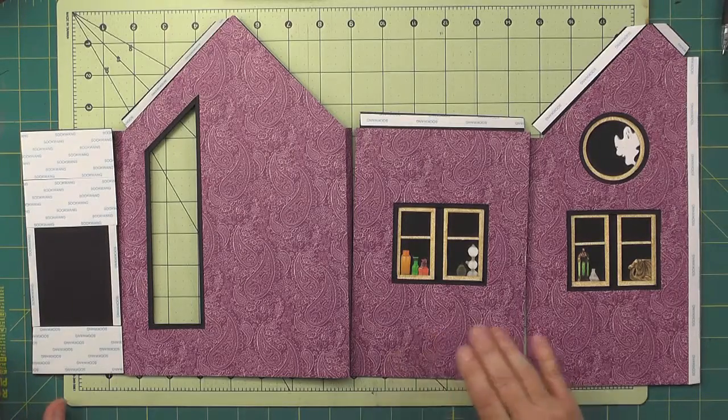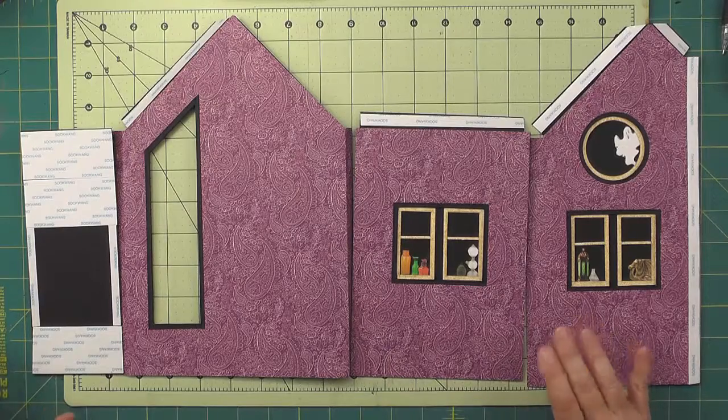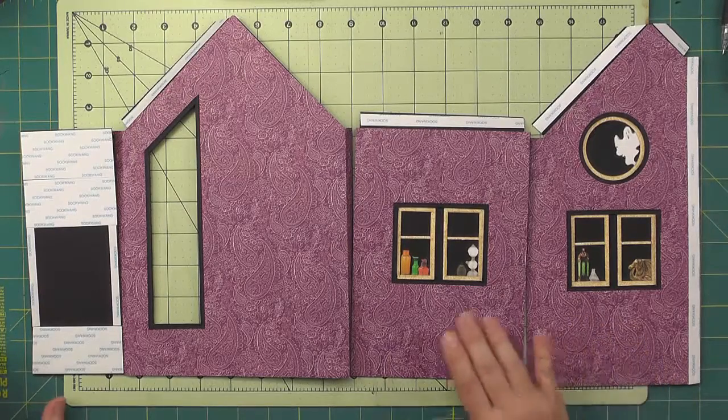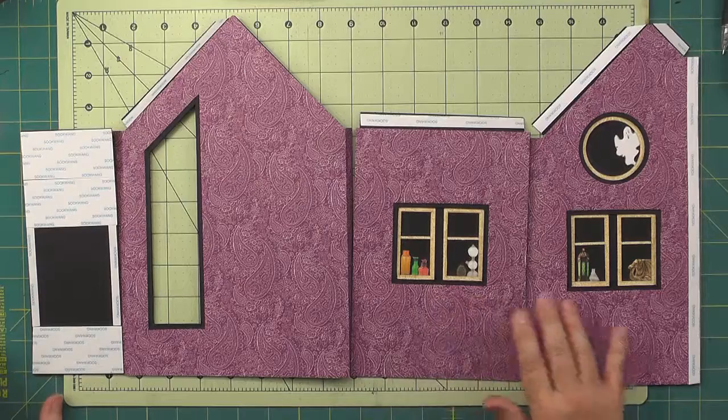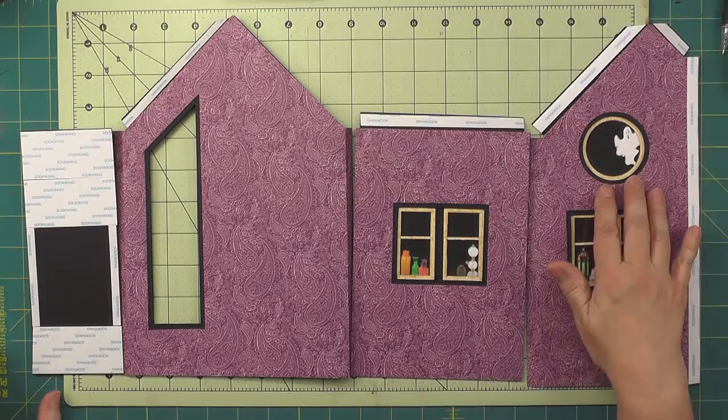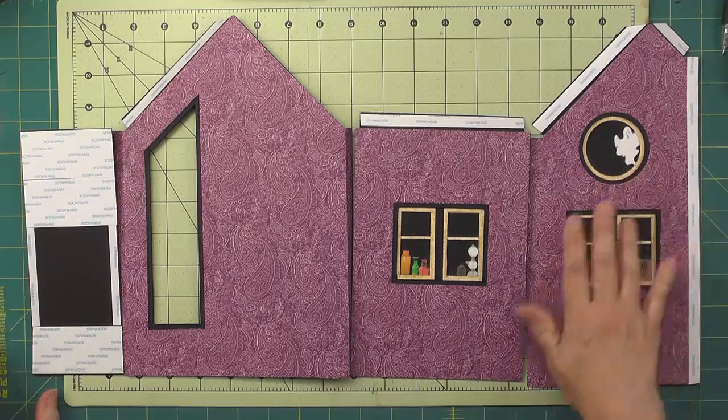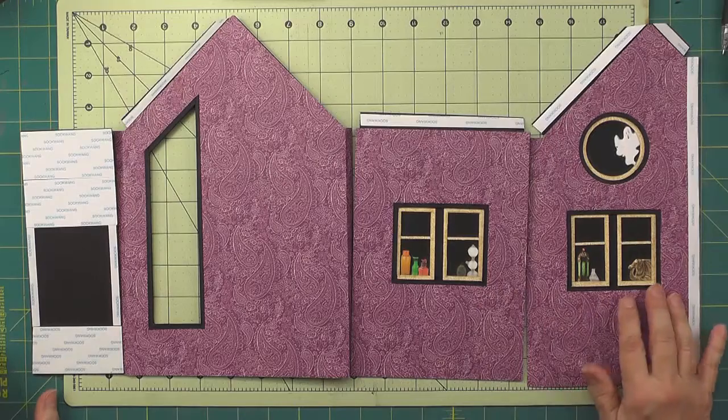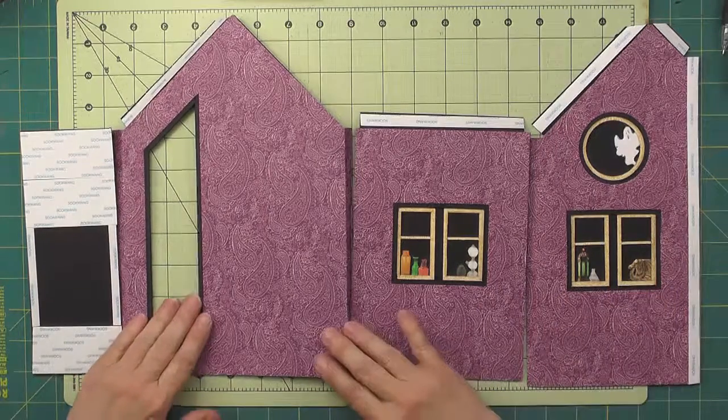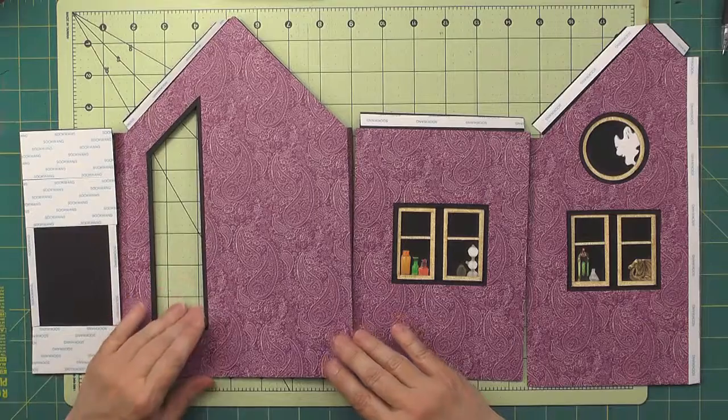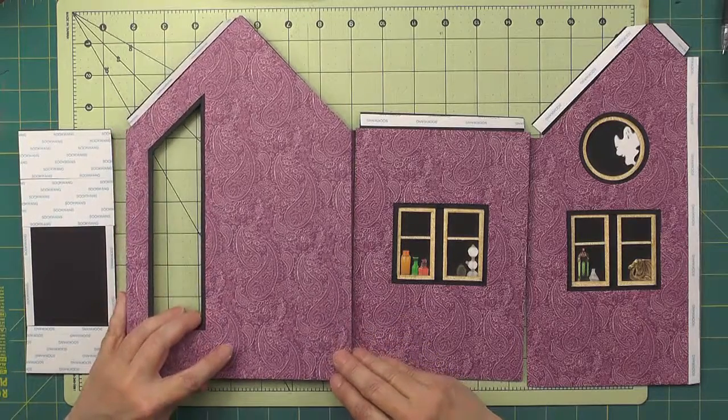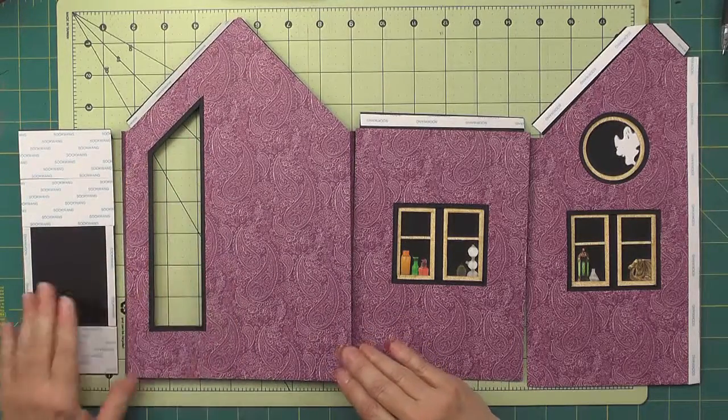Now we're ready to make the left section of the house three-dimensional. I made some decisions about what to go into the windows here and backed them with black cardstock. This is the inset where our niche is going to go, so that just stays like it is.